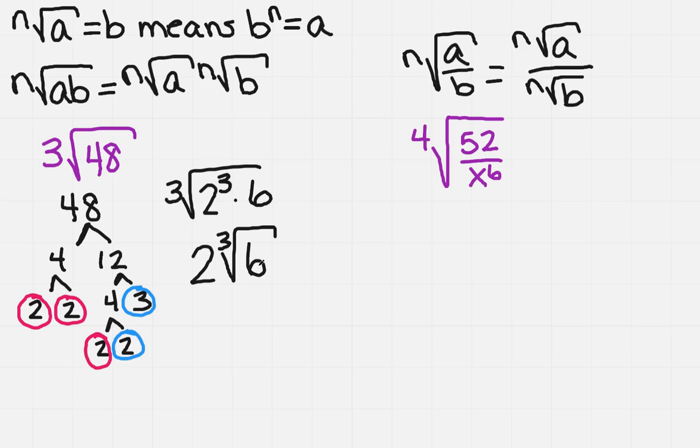Now what happens over here on the right? I'm doing division, but same thing. I still want to use the tree method to see if there's going to be anything that is going to have a perfect 4th power. So if I look at 52, the first thing that I see is actually a 2. And I would do 2 times 26. And then 26 would be 2 times 13.